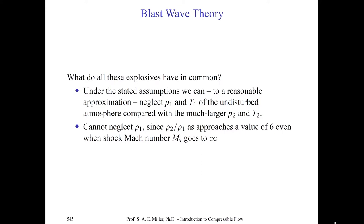What do all these have in common, including nuclear weapons? Under our stated assumptions, we might reasonably neglect P1 and T1 of the undisturbed atmosphere because the static pressure and temperature after the blast wave passes will be much larger. However, we can never neglect density, because we'll have near-vacuum in front of our wave. The ratio ρ₂/ρ₁ will approach values near 6, as shown in our previous asymptotic analysis — as the blast wave Mach number becomes very large, the density ratio across the wave approaches 6.